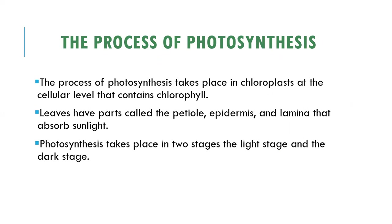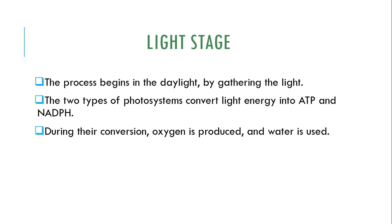The process of photosynthesis takes place in the chloroplasts at the cellular level, which contain chlorophyll. The leaves have the petiole, epidermis, and lamina that absorb sunlight. Photosynthesis takes place in two stages: the light stage and the dark stage. In the light stage, the process begins during daylight by gathering light from the sun. Two types of photosystems convert the light energy into ATP and NADPH, and during these conversions oxygen and water are produced.